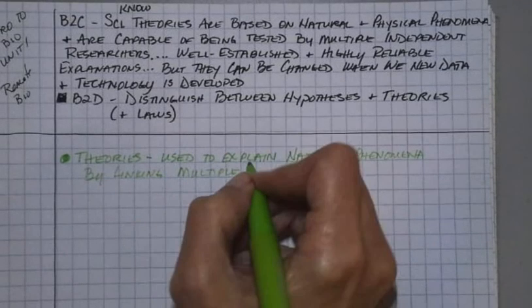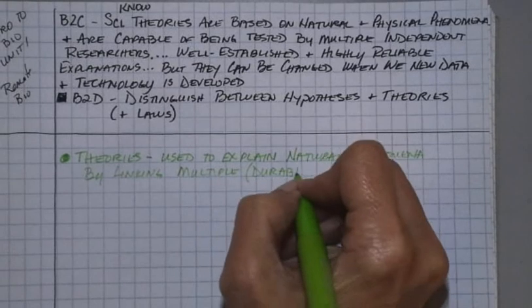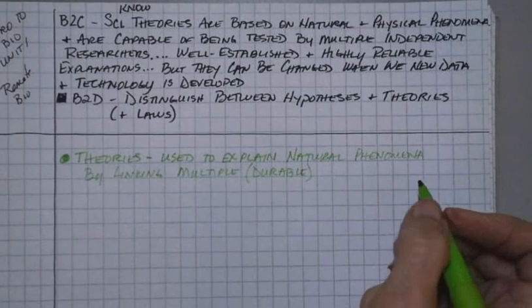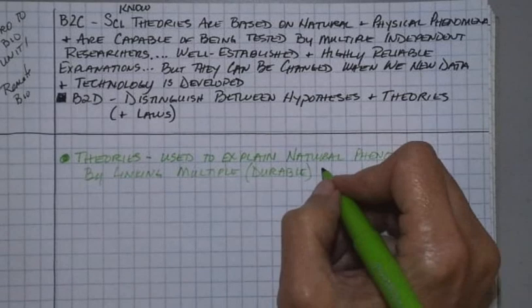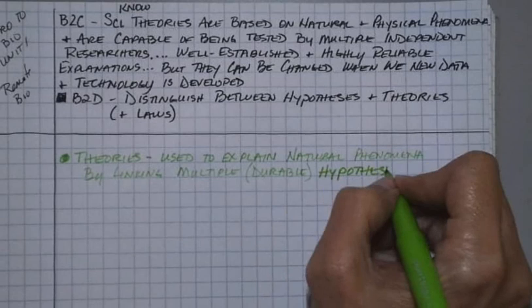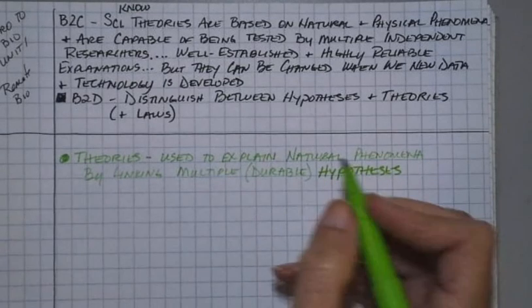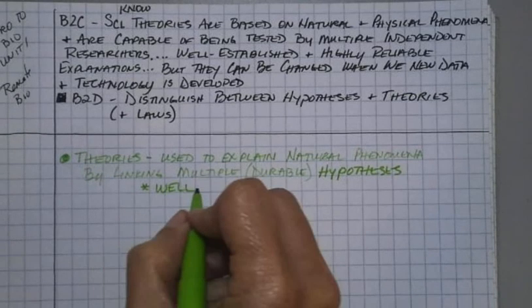Durable means they stand the test of time. If you have a durable pair of jeans, it means they're tough. They can withstand a lot. They're tough, they can stay around for a long time. Durable hypotheses. And the key here is that they are well-established. Theories are well-established. They're not fly-by-night, they're not going to go away in one day. Well-established.